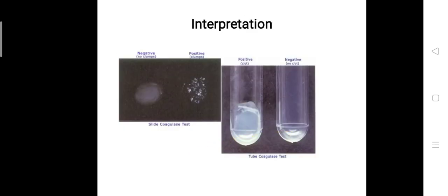Now for the interpretation. In the image I have given results for the slide as well as for the tube. In the slide method, if there is no clump, it indicates that the organism does not have the enzyme coagulase present.